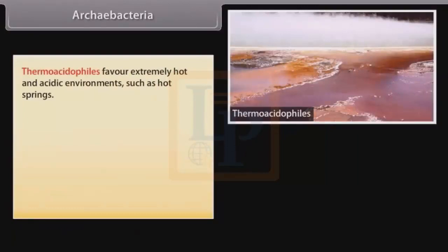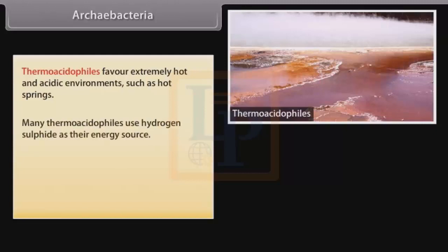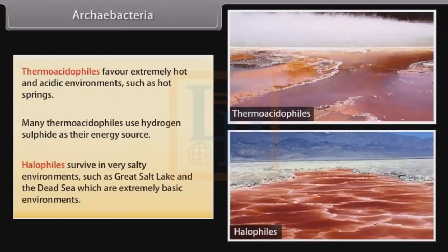Thermoacidophiles favor extremely hot and acidic environments such as hot springs; many use hydrogen sulfide as their energy source. Halophiles survive in very salty environments such as the Great Salt Lake and the Dead Sea, which are extremely basic environments.